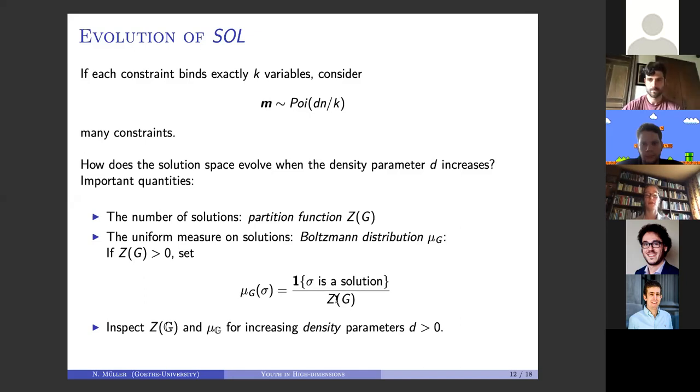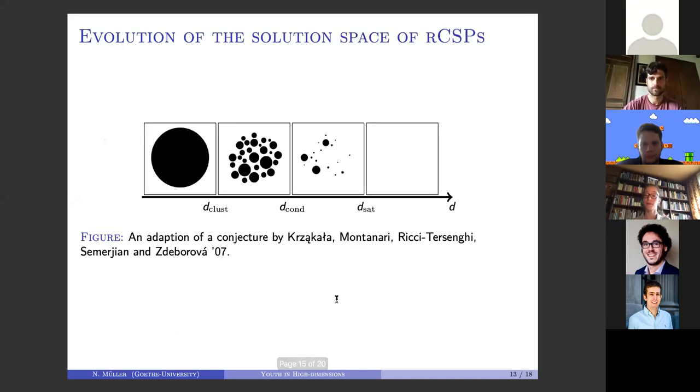Then we look at the evolution of the space of solutions as the average number of clauses in which each variable participates increases. Here's again an adaptation of a conjecture by Krząkała, Montanari, Ricci-Tersenghi, Semerjian, and Zdeborová. As you can see, the picture looks quite similar up to the condensation threshold.